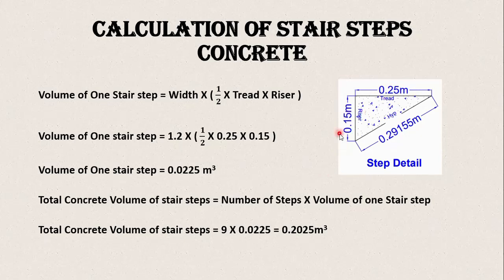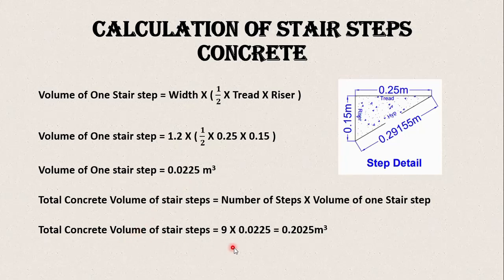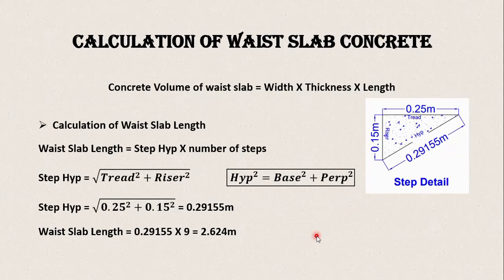Here you can see the detail of a step with a 0.15 meter riser and 0.25 meter tread. It looks like a triangle, so we multiply the area by the width to get the volume of one stair step: width × (1/2 × base × height), where base is the tread and height is the riser. The volume of one stair step is 0.025 meter cube. With a total of nine steps, the total volume of concrete steps is 0.2025 meter cube.